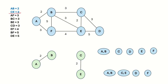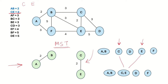Next we check edge CE, which has two vertices C and E. We check their representative sets: the set representing C and the set representing E. Again they are disjoint sets, so this edge can also be added to the MST. We add edge CE to the MST. Note that Kruskal's algorithm does not build the MST in a connected way — it adds edges based on weight, so the MST may be disconnected temporarily but will ultimately become connected. We also merge the two sets for C and E.